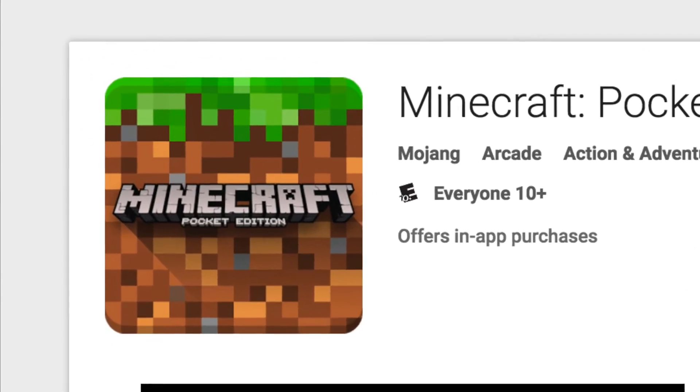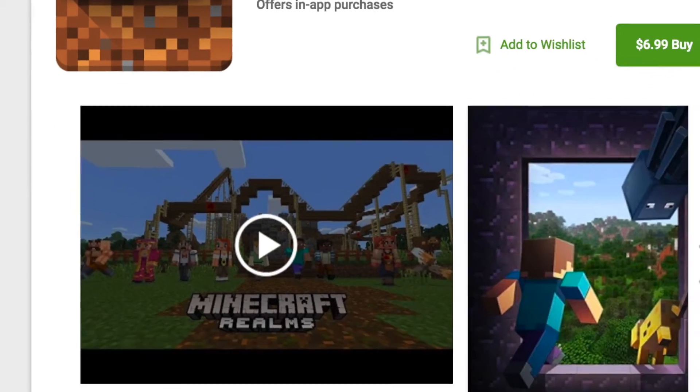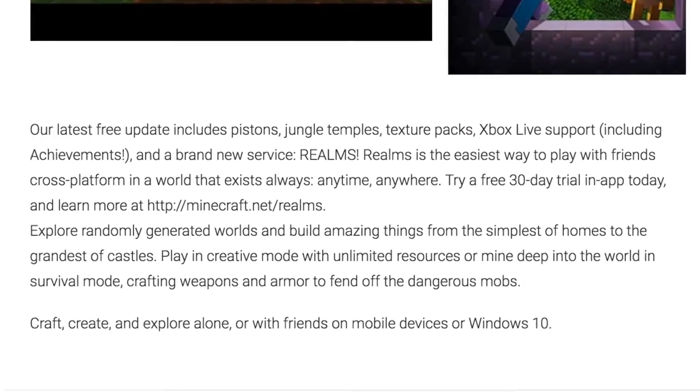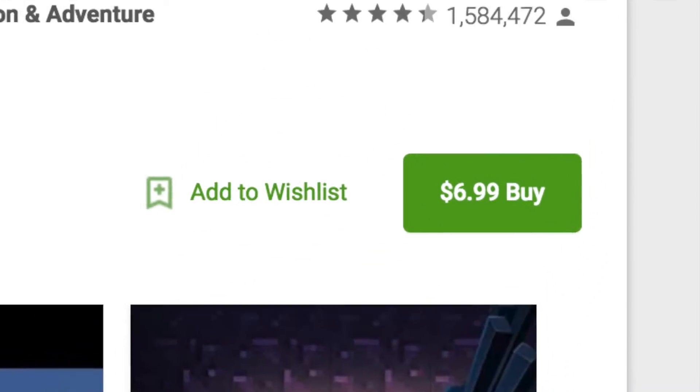We recommend doing some A/B testing with a couple of different items. These include the app icon, the screenshots of the app that you include, the description, and of course, the price. By tracking your ranking in the App Store and the number of downloads that you receive over time, you can start to get a pretty good idea of which of these items has the most impact for your app.